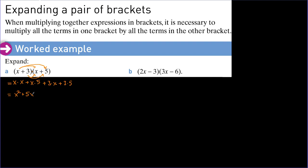Then x times 5 is equal to 5x. From the previous operations we get plus 3x and plus 15. I have to explain this important point: 5x and plus 3x can be added together, which is equal to 8x, because they are the only like terms. You cannot add x squared by 8x, or 8x by 15, or x squared by 15, because these are not like terms. We can add only like terms together.